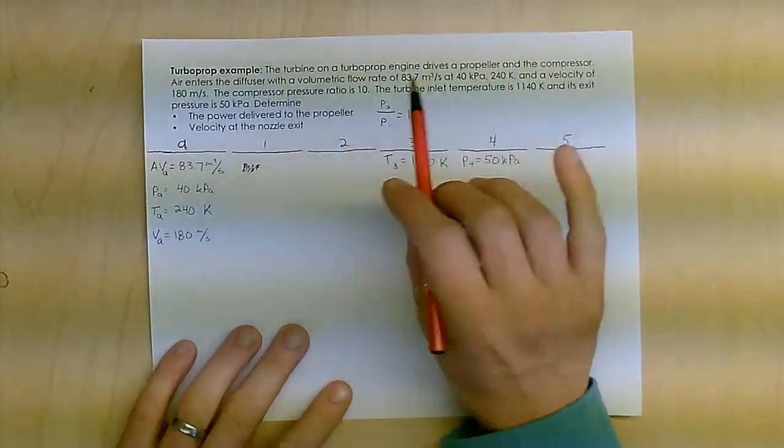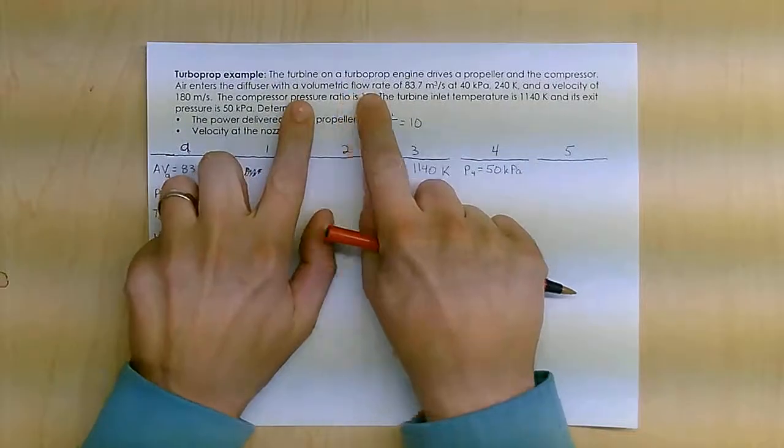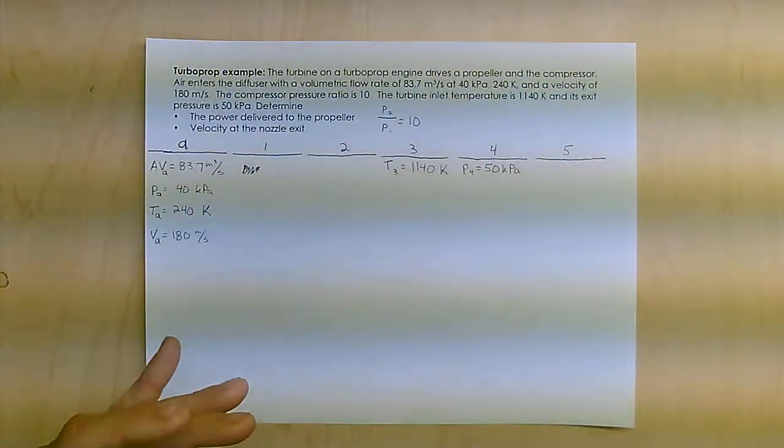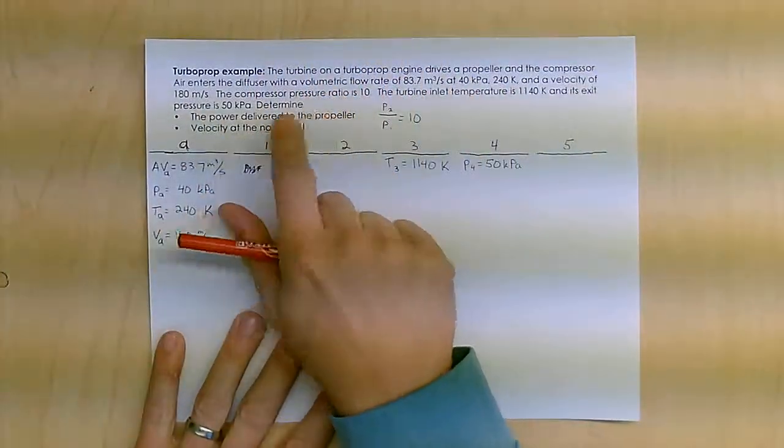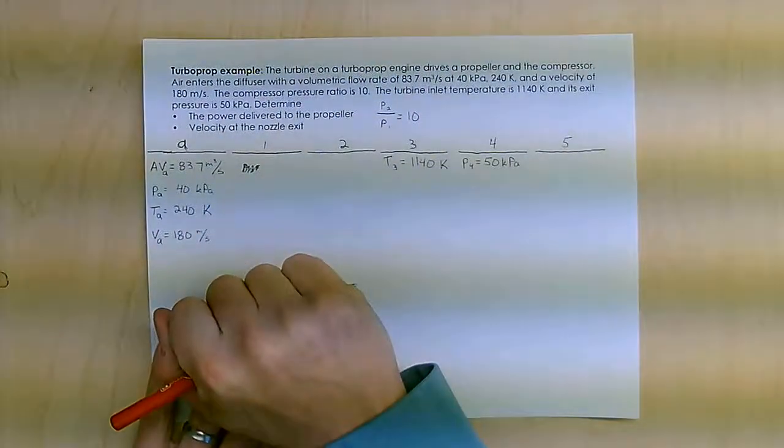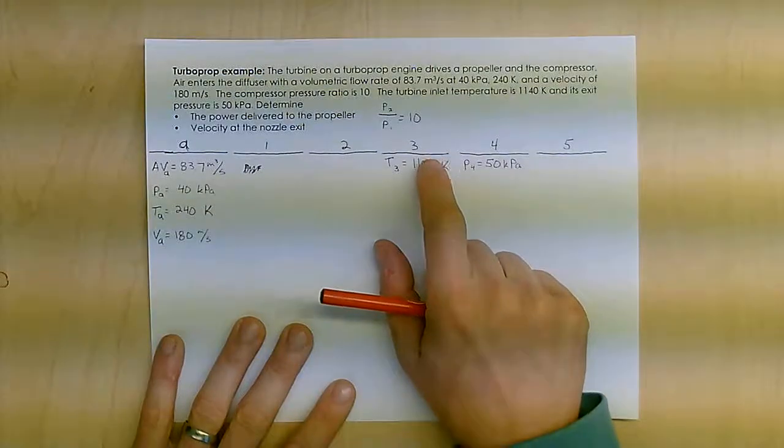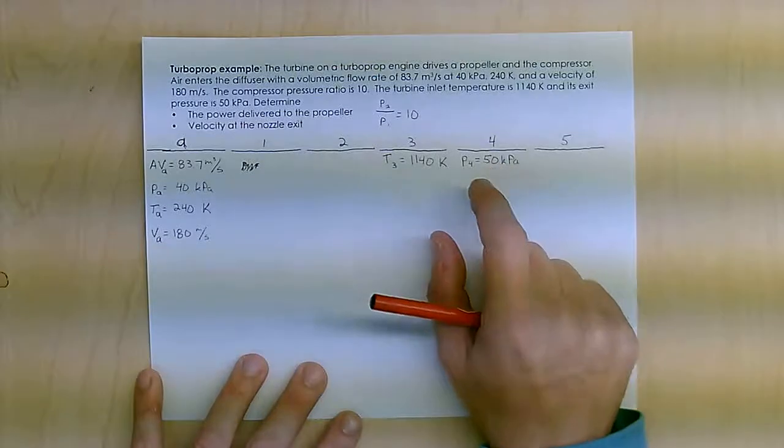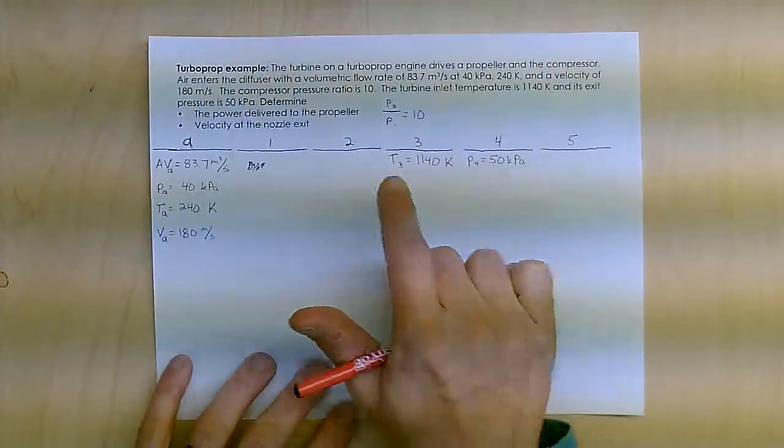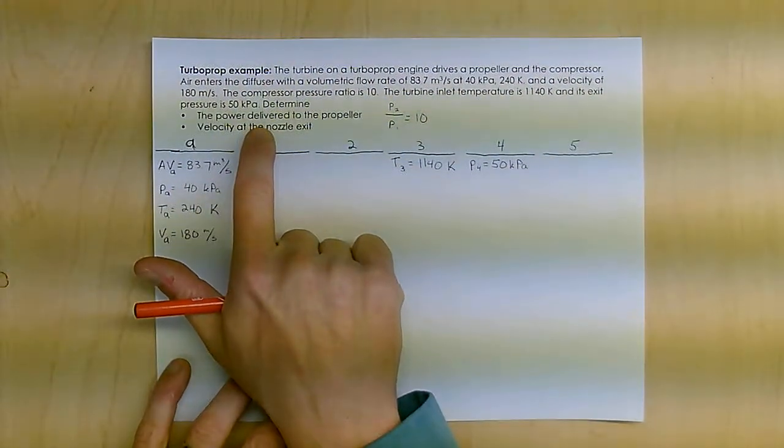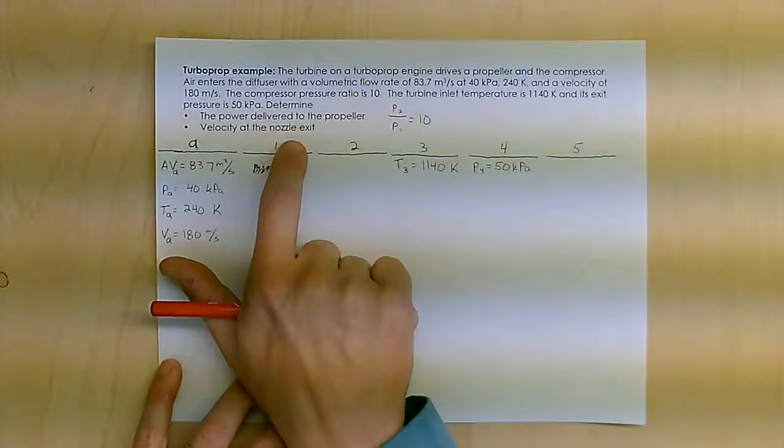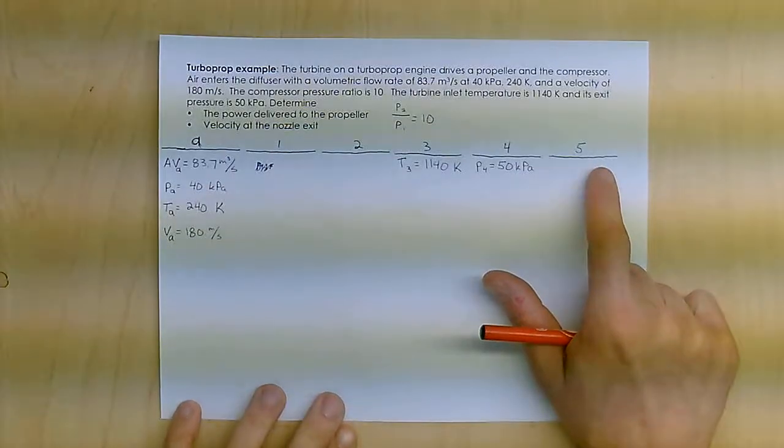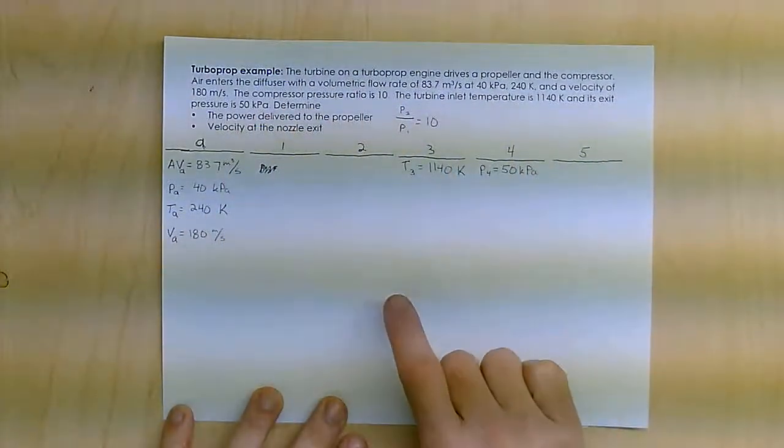I've got a turboprop example here with a whole bunch of states coming into the jet engine. The compressor has a pressure ratio of 10, the temperature at the inlet of the turbine is 1140 kelvin, the pressure at its exit is 50 kilopascals. So I want to know the power delivered to the propeller and then I want to know the velocity out the back end of the turboprop engine.